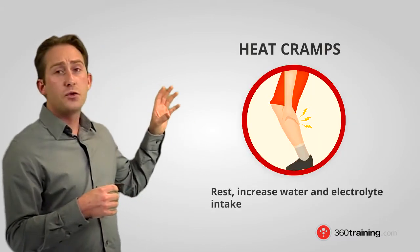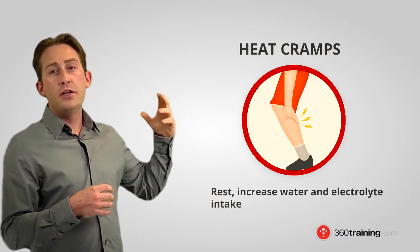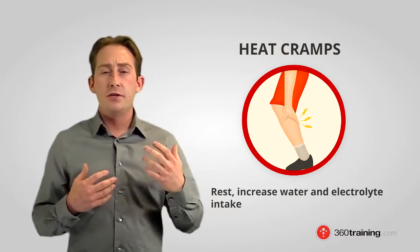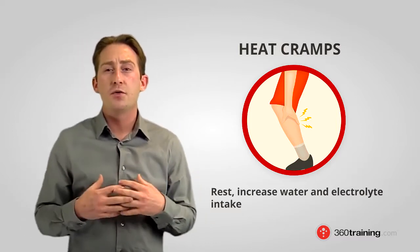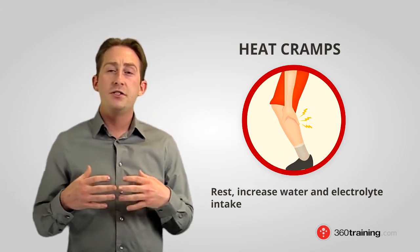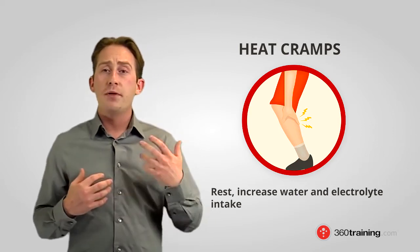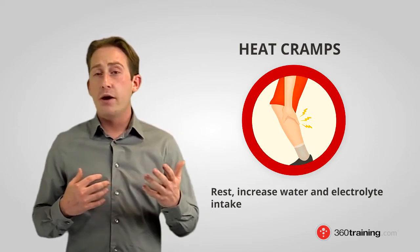Second one is heat cramps. Now this is when you start to lose, through sweating, some of your salts. So your body starts to cramp up. You might get it in your legs, your abdomen, your back, and what you want to do is replace those electrolytes. So you want to drink water, replace electrolytes, and take a break.